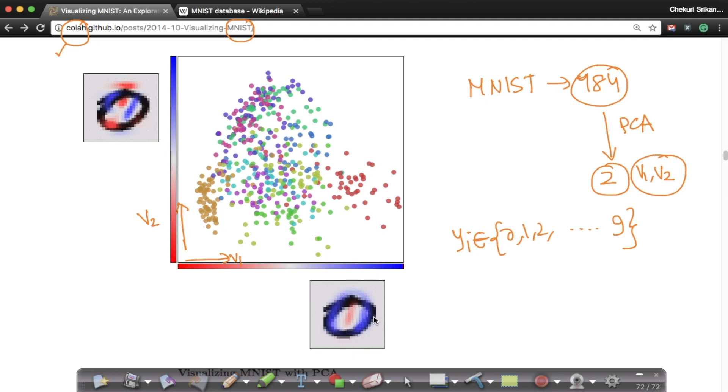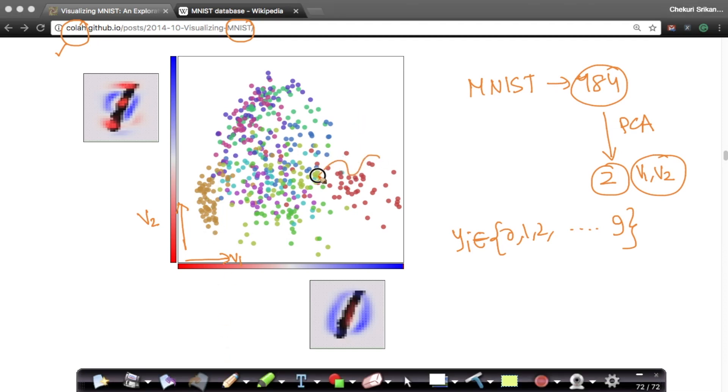Just follow my mouse pointer. These red points are all your zeros. These brown points are all your ones. One thing that you will quickly notice is all your zeros are roughly in this region. All your ones are roughly in this region.